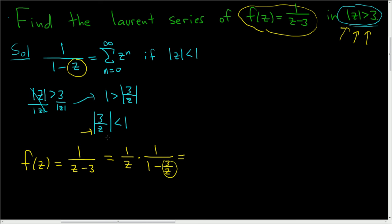And we know that 3 over z modulus is less than 1. So this is 1 over z, the sum as n runs from 0 to infinity. And instead of z to the n, it's going to be 3 over z to the n.